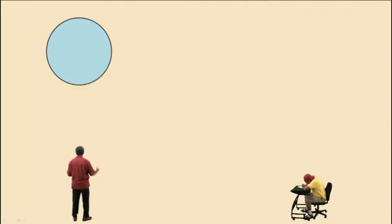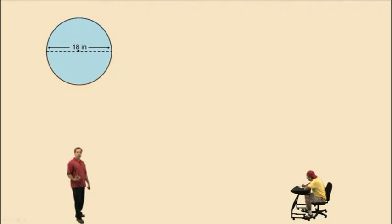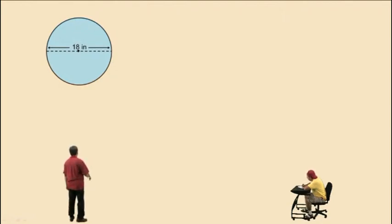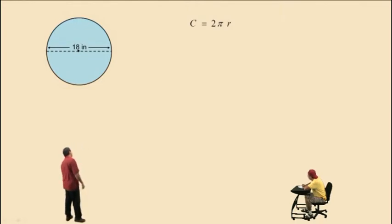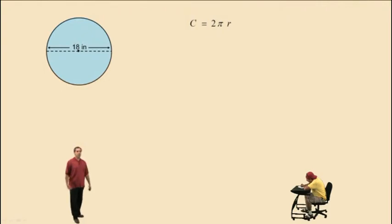Here we have a circle. The distance from side to side through the center of the circle is called the diameter. Let's begin by finding the circumference of the circle. The circumference is the distance around the edge of the circle. The formula for circumference is C equals 2 pi r, where r represents the radius.